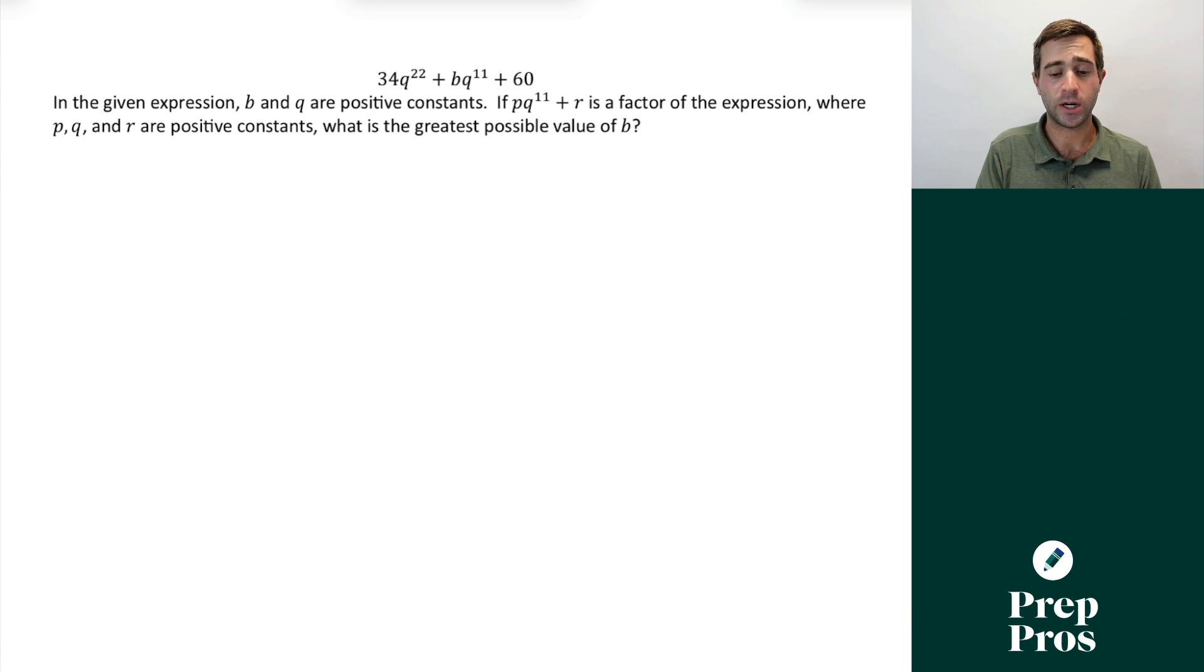In the given expression, b and q are positive constants. If pq^11 + r is a factor of the expression where p, q, and r are positive constants, what is the greatest possible value of b? This looks borderline impossible to solve as it's currently presented. We've got all these q's, q^11, q^22. It looks really overwhelming. But there's one step we can take to make this a lot more friendly for us to work through.